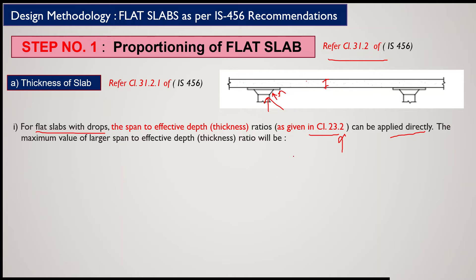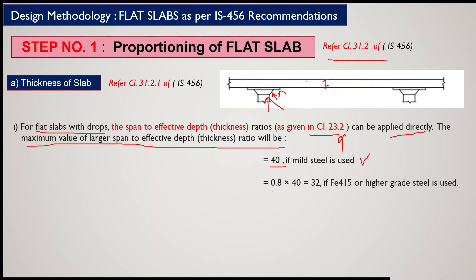The maximum value of the larger span-to-effective-depth ratio: if using mild steel, the L/d ratio is 40. However, the code states this ratio can be reduced to 80% — that is, 40 × 0.8 = 32. If a higher grade of steel is used, this ratio can be modified accordingly.